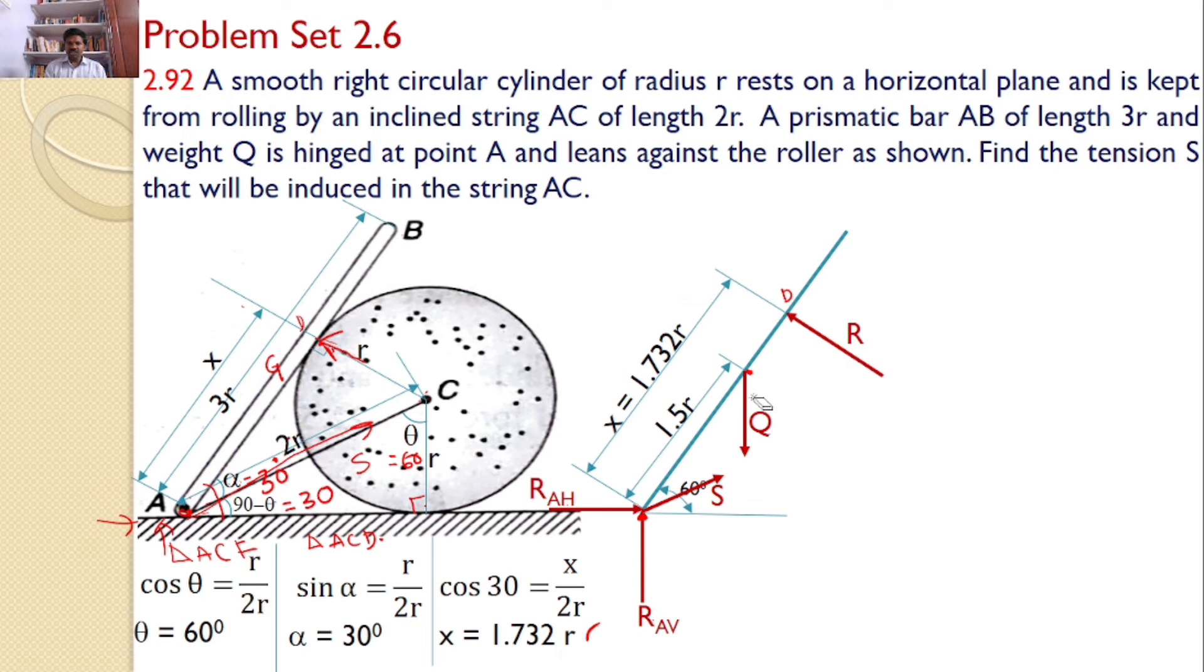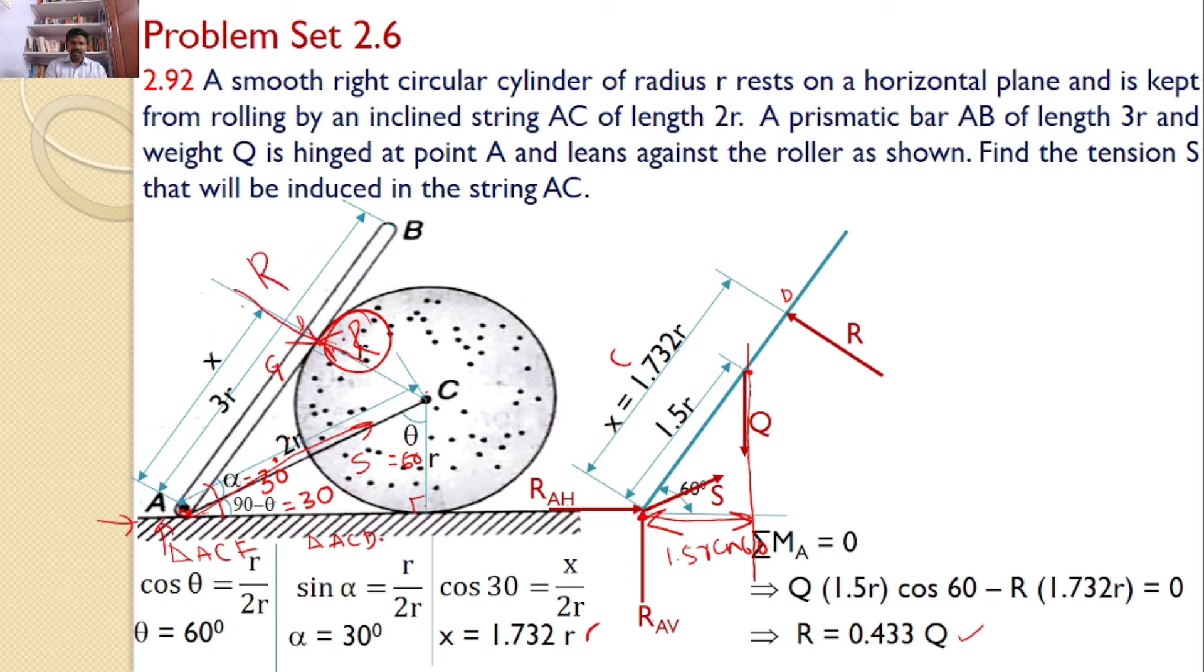I also required the distances. The line of action of Q, this distance I required. By using this right angle triangle, I can find this distance as 1.5R into cos 60. I can write the equation sigma MA equals 0. That means Q multiplied by 1.5R cos 60 minus R into 1.732 into R is equal to 0. From this, I can find the reaction R, that is 0.433Q. The same reaction will act on the cylinder but in the opposite direction.